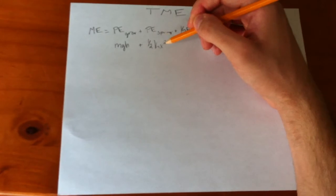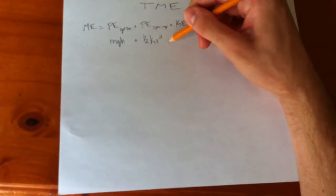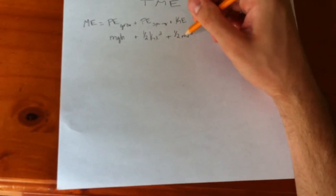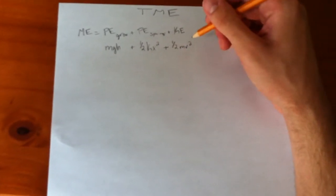k is the spring constant, x is the displacement, plus one-half mv squared, where m is the mass of the object, v is the velocity.